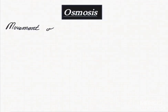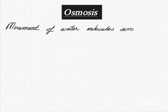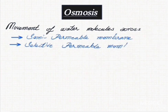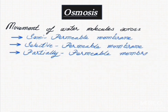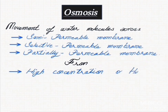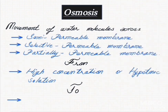Osmosis is the movement of water molecules across a semipermeable membrane. The other terms used for semipermeable membrane are selective permeable membrane or partially permeable membrane. This is the movement of water molecules from high concentration of solvent, or from hypotonic solution where there is low concentration of solute,